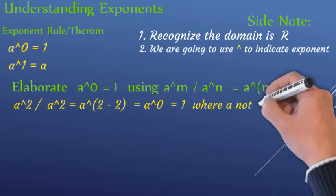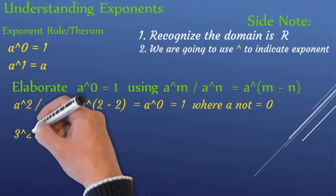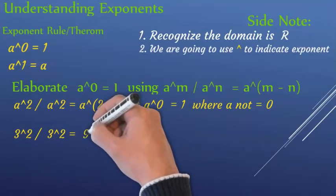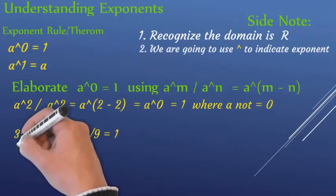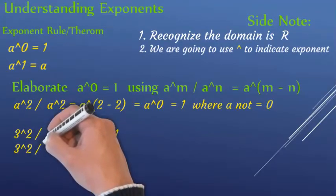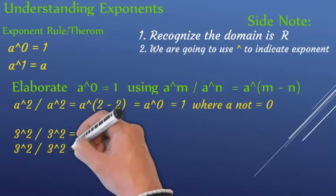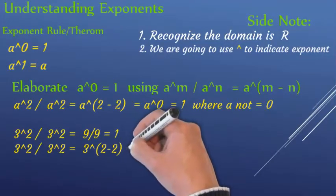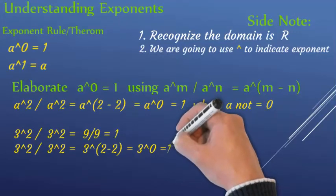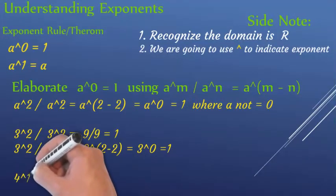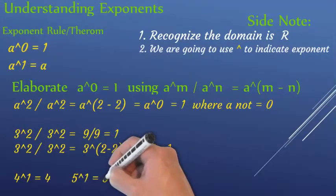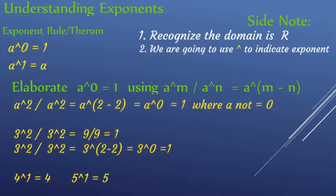A cannot equal 0, because if you get A to the power of 0 with A equal to 0, you get 0 over 0 which is not a real number. For example: 3 squared divided by 3 squared — 3 squared is 9, and 9 divided by 9 is 1. Using the rule: 3 to the power of 2 minus 2 equals 3 to the power of 0, which equals 1.